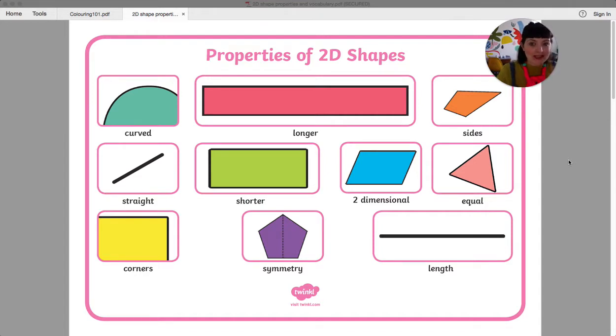Now when we talk about properties of shape, it means all of the things that we can look at to compare them and to describe them. So what is a 2D shape?